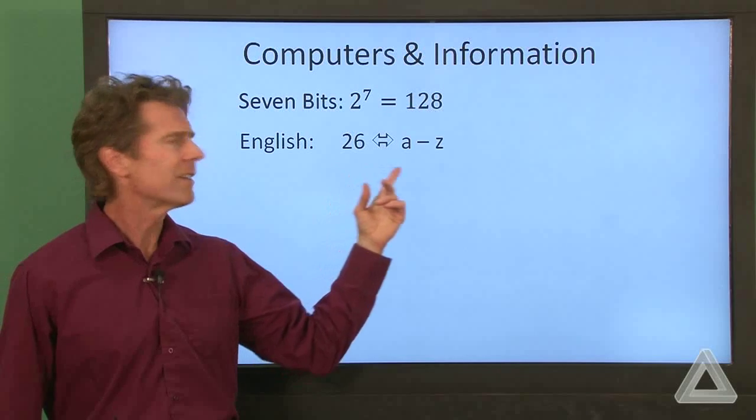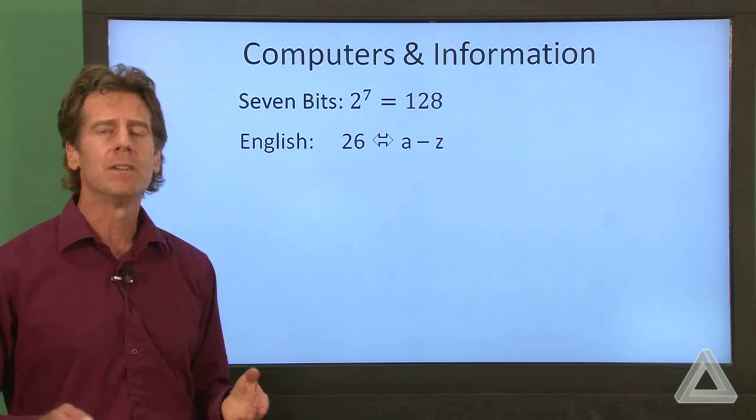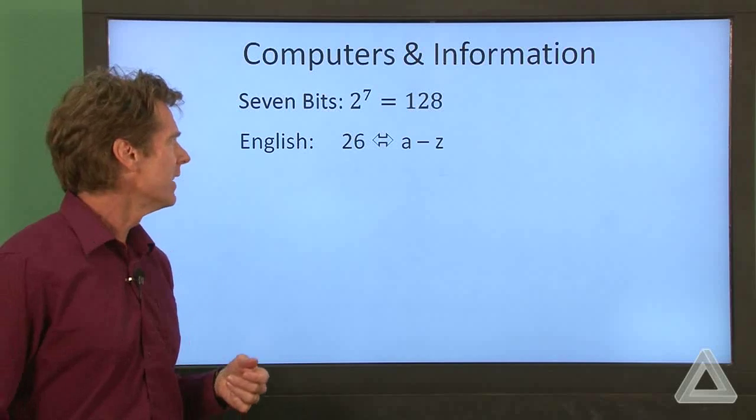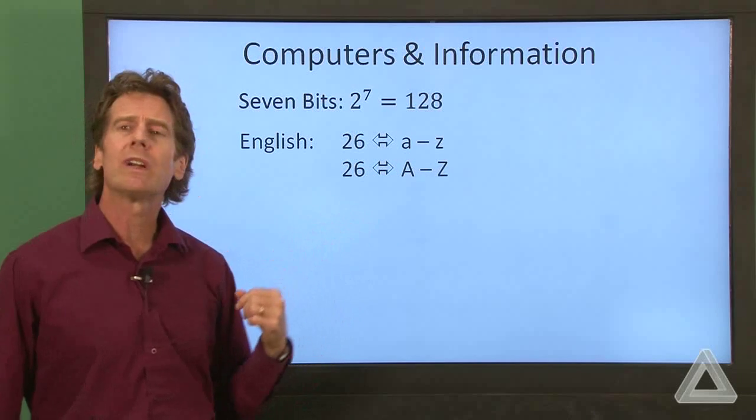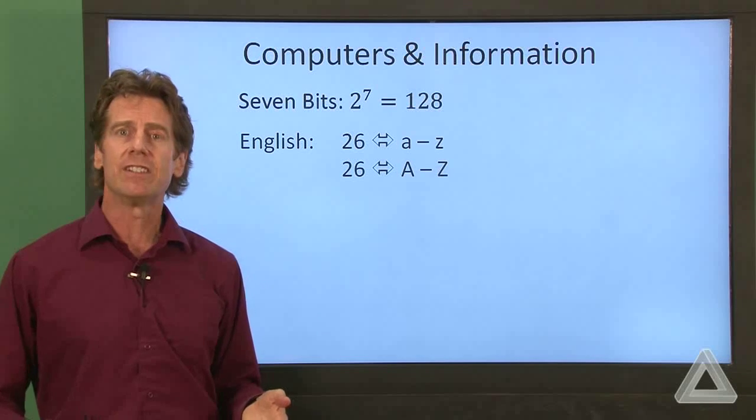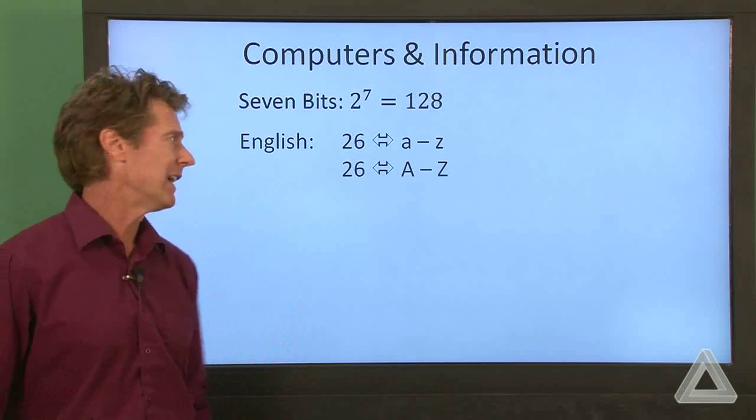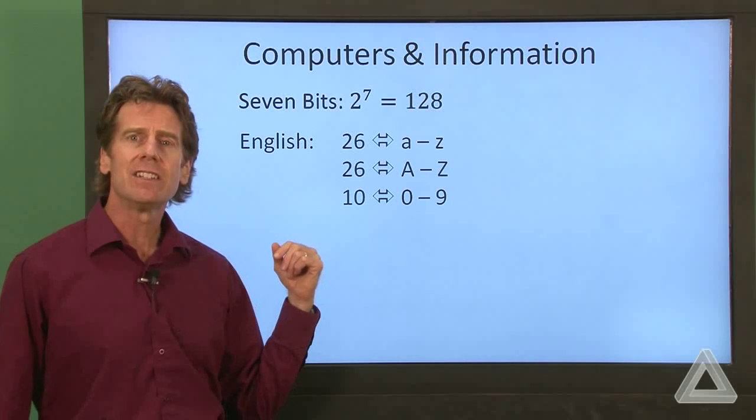So with English, we have 26 letters, A through Z. But if we're writing this, we pay attention to uppercase or lowercase. So there are 26 lowercase letters and 26 uppercase letters. We might want to write the digits, zero through nine, maybe like a telephone number or something. So there are ten digits.